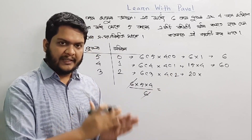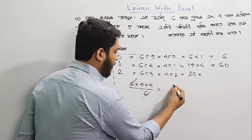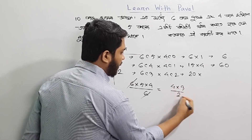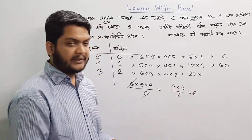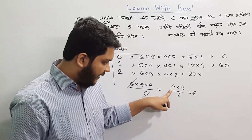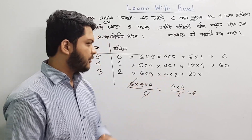So 20 into 4C2. 4C2 is 4 into 3 divided by 2, which gives 6. So n into n-1, n-2 divided by 2, giving 6.